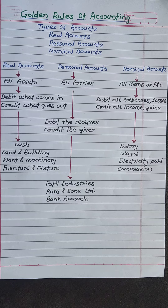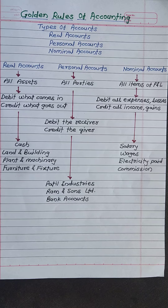The examples of Real Accounts are: cash, land and building, plant and machinery, furniture and fixtures, etc.